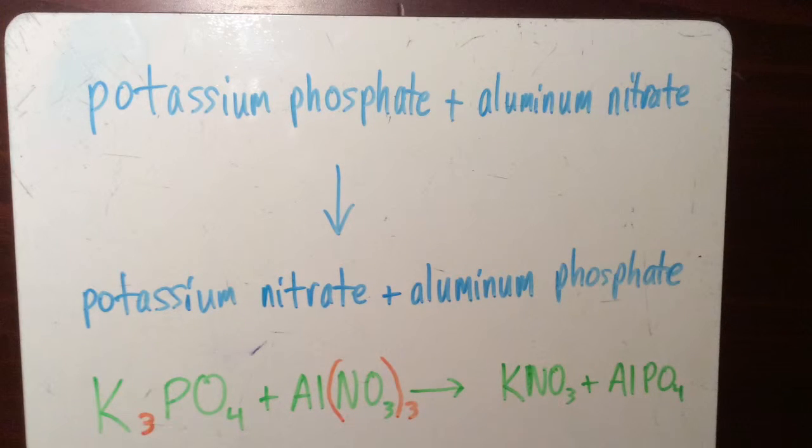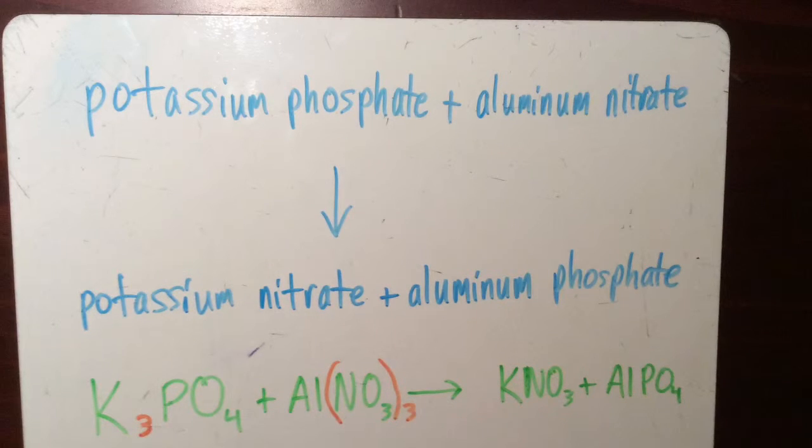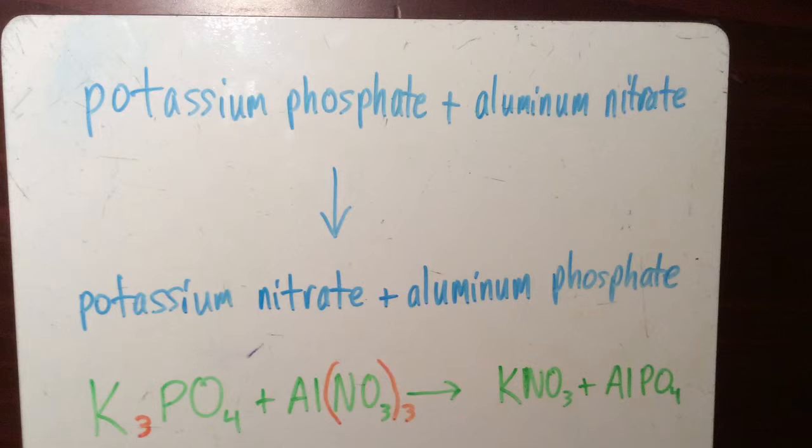The other two molecules are already balanced with a positive 1 negative 1 in potassium nitrate and a positive 3 negative 3 in aluminum phosphate.